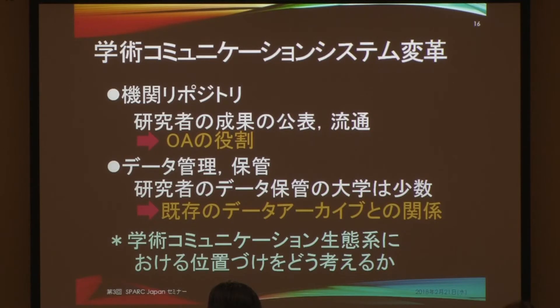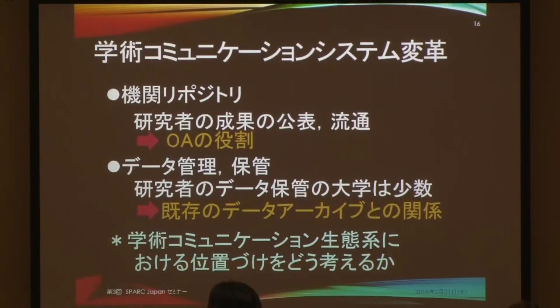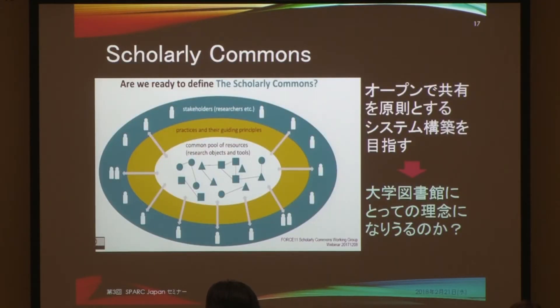Going forward, data management and data storage will be quite important. Whether libraries will be able to store the data, whether university campuses can store the data — it is going to be a competitive landscape. Whether libraries or universities can be competitive enough vis-à-vis those service providers — competition may not be the most important point. But I think there ought to be certain divisions of labor within the ecosystem. So what things can we expect of universities or libraries?